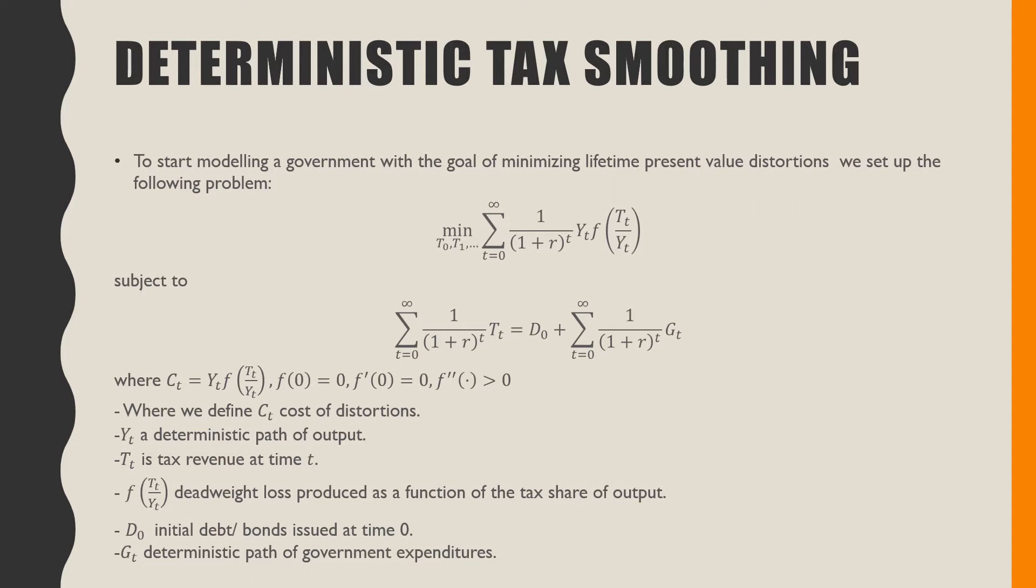We are minimizing this series of costs of distortions at time t from t equals zero to infinity, subject to our standard government budget constraint in discrete time. We have this C term which is not in our objective problem but would be there - we refer to that as our cost of distortion.